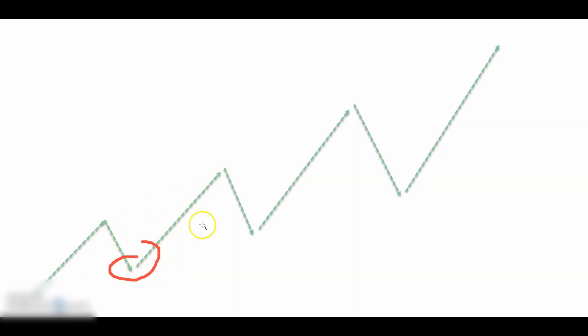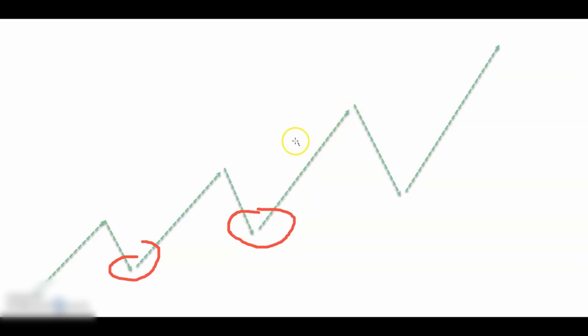As a swing trader, we try to catch those swings in an uptrend and get an entry around the pullback area, then scale out and catch most of the move. When one swing is over, we look for a second opportunity in another stock, finding another entry near the pullback area and EMAs, and trail our stop.